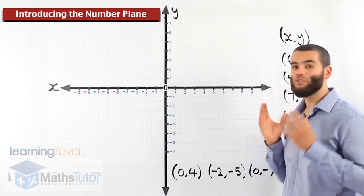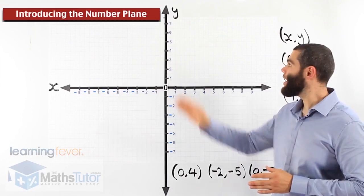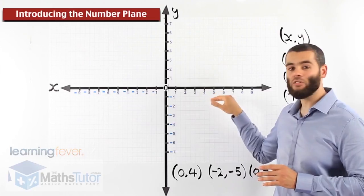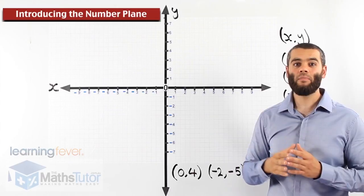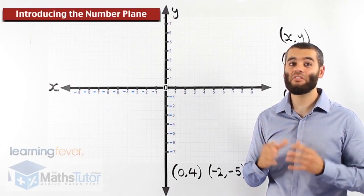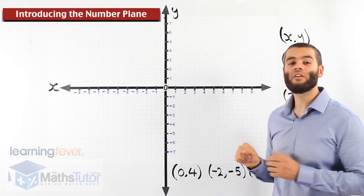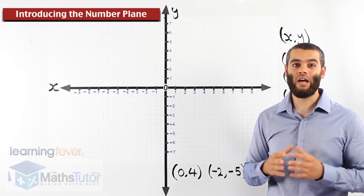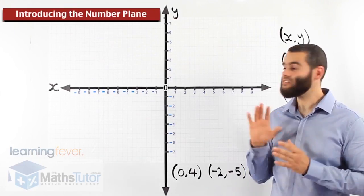The number plane is made up of two axes: the x-axis going horizontally and the y-axis going vertically. The x-axis is always horizontal and the y-axis always vertical. The number plane is used for coordinates and plotting points, and also to draw straight lines and curved lines as well.